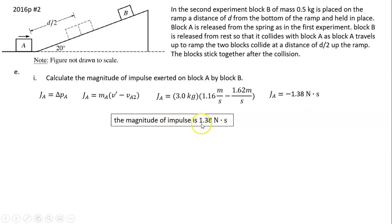Part E(b): In what direction, if any, is the impulse exerted on block A by block B? We already figured out that J_A, the impulse on A, is negative. That means the direction is down the ramp. That's it. I hope it helps. Thanks for watching. See you next time.